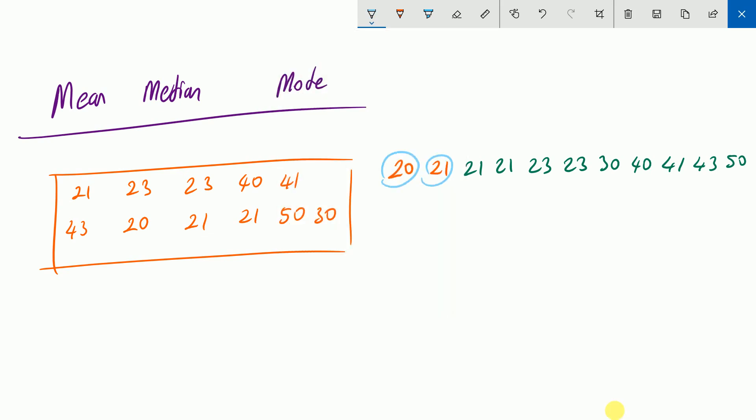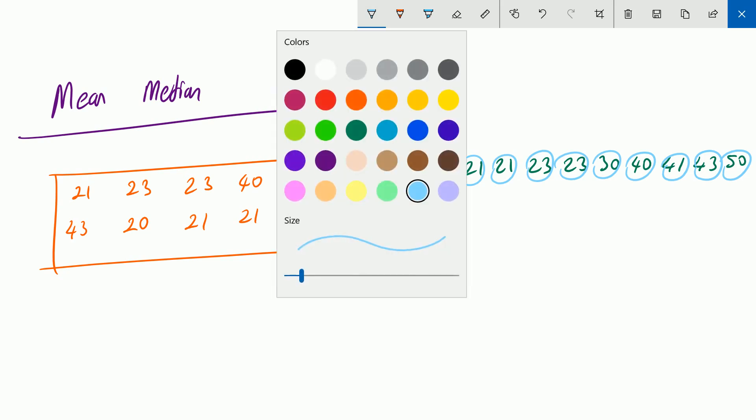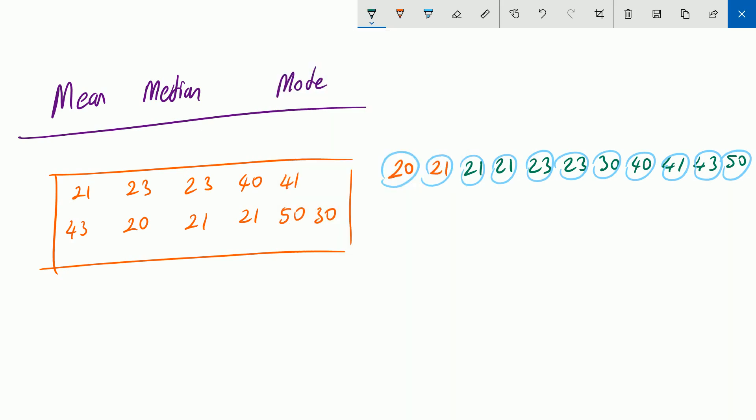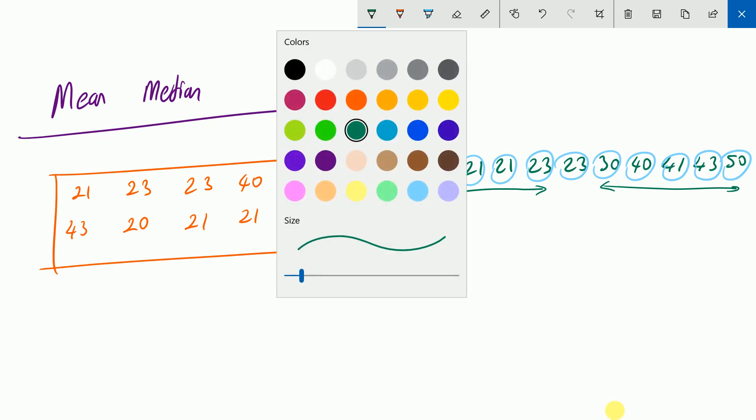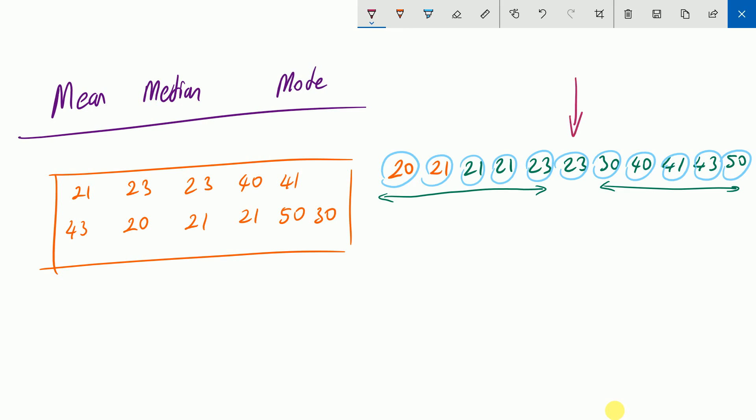So three, four, five, six, seven, eight, nine, ten, eleven numbers. To find its median, we are going to look directly in the middle. Look at those numbers: five numbers will be on the left, five numbers will be on the right. So in the middle, the middle number is 23. 23 is the median of the set.